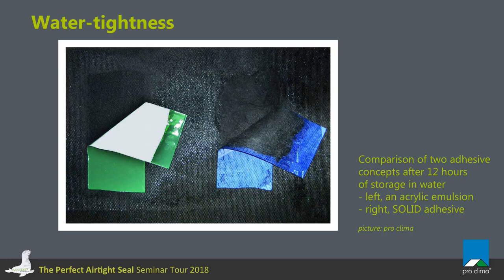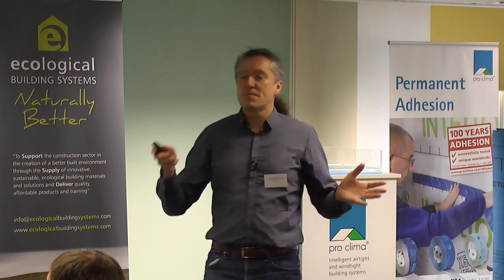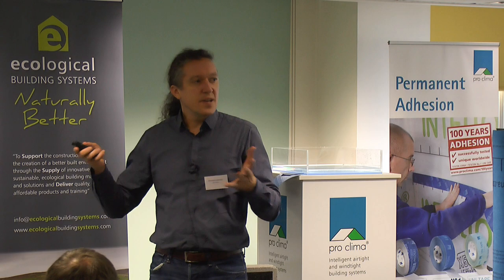Here is a picture comparing a water-based glue with the solid glue of the Tescon Varna tape. The green tape with the water-based glue was put onto spunbond and stored for 12 hours under water. You can see the glue on the green tape turns white — it absorbed a lot of water during those 12 hours — while the Tescon Varna tape hasn't changed its color. And we get the material break when we try to release it. This is the advantage of our solid glue.